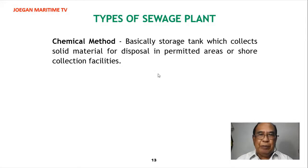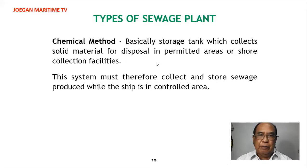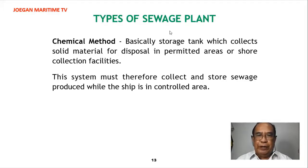Types of sewage plant. First is the chemical method — a storage tank which collects solid material for disposal in permitted areas at shore collection facilities. This system must collect and store sewage produced while the ship is in a controlled area.